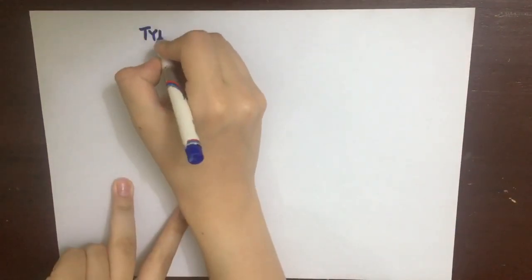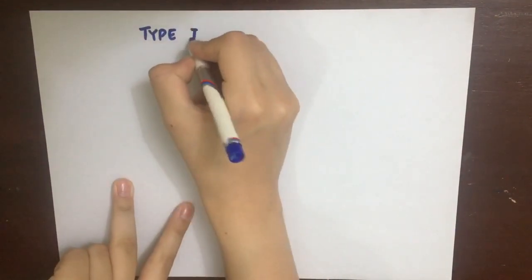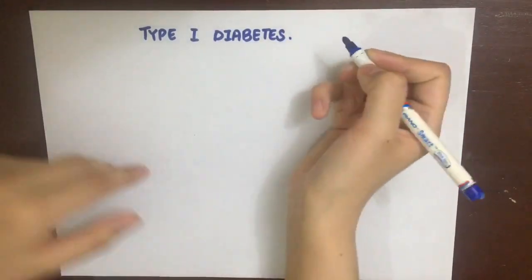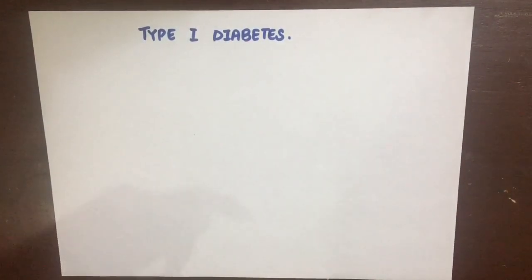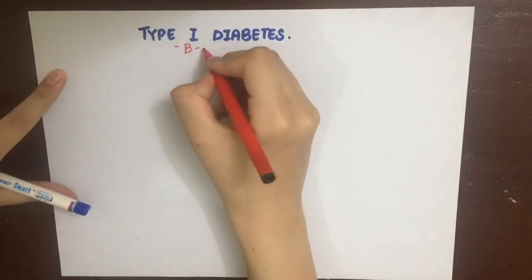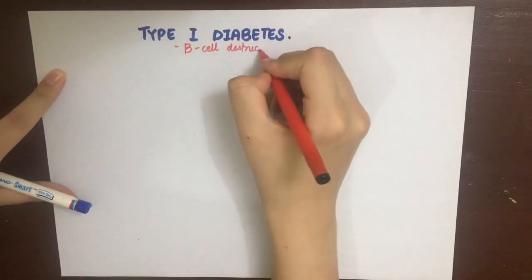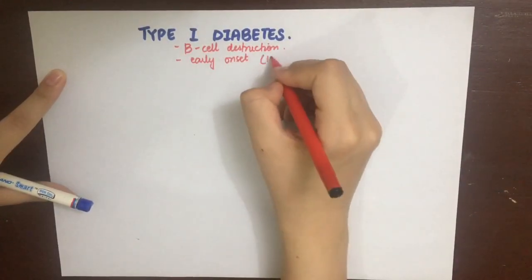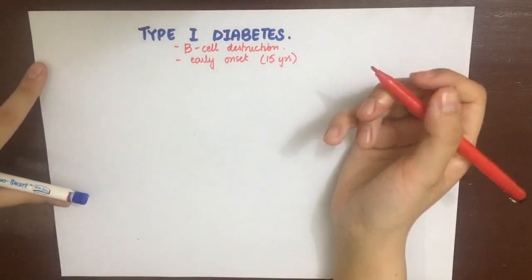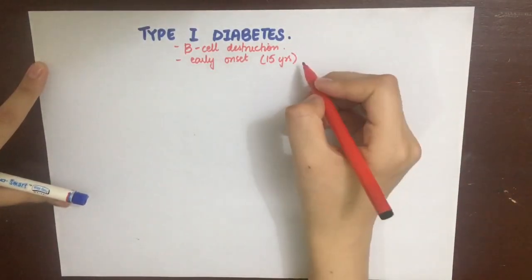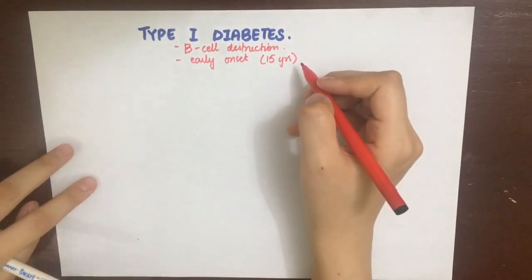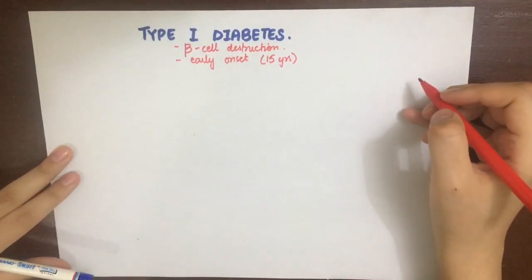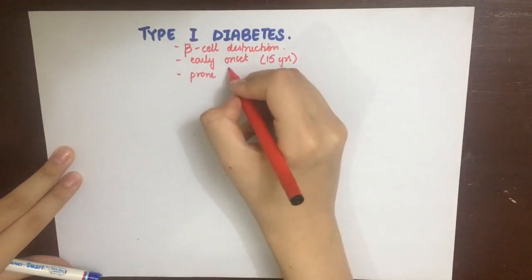Before studying insulin therapy, let's first briefly recap type 1 diabetes. Type 1 diabetes is characterized by hyperglycemia and is due to the destruction of the majority of the beta cells of the pancreas due to an autoimmune disease, for example secondary to a viral infection. That's why it has an early onset of about 15 years of age. Type 1 diabetics are also prone to ketoacidosis.